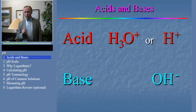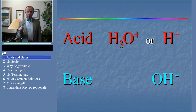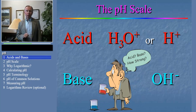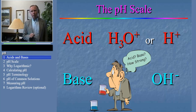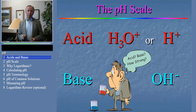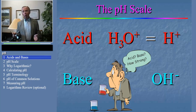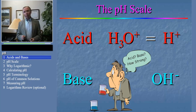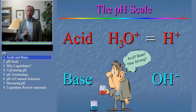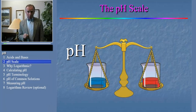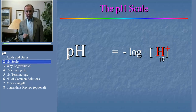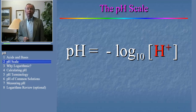The pH scale is used to express the strength of an acid or base solution. Just by way of reminder, the hydrogen ion really exists in solution as the H3O+ or hydronium ion. We'll sometimes use the hydrogen ion, sometimes the hydronium ion, just to keep you on your toes. But remember that the hydronium ion is closer to the kind of structure that really exists in solution. The pH of an aqueous solution is defined as the negative log to the base 10 of the hydrogen ion or hydronium ion concentration.